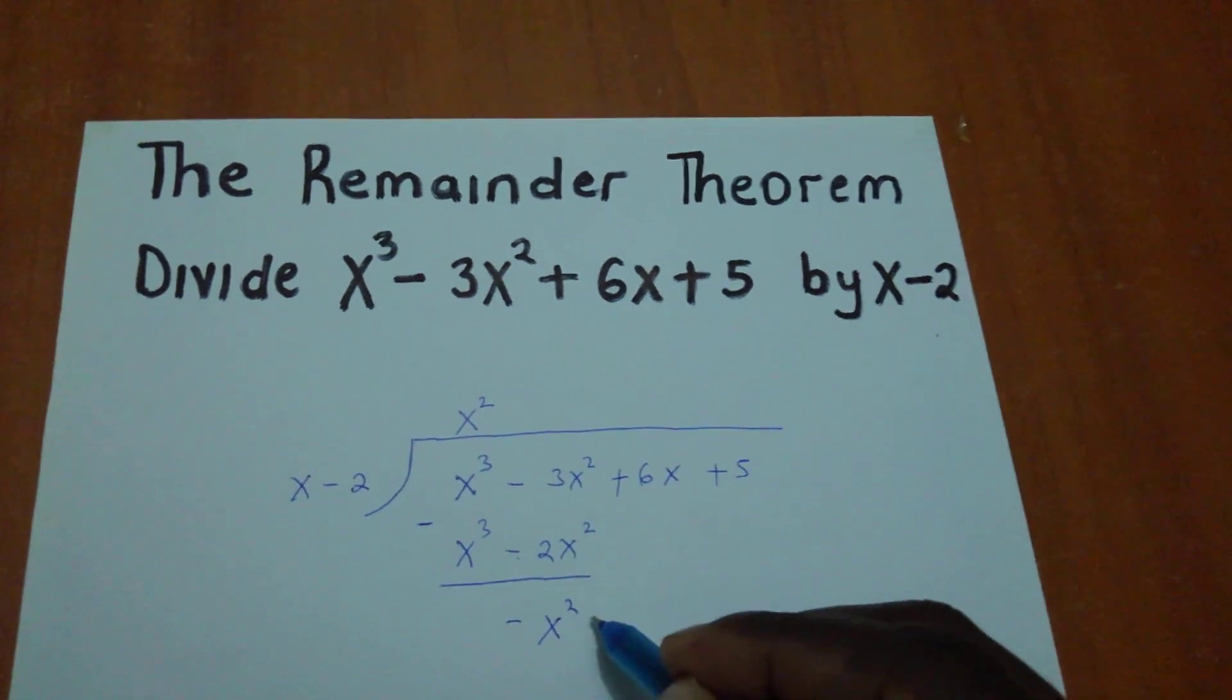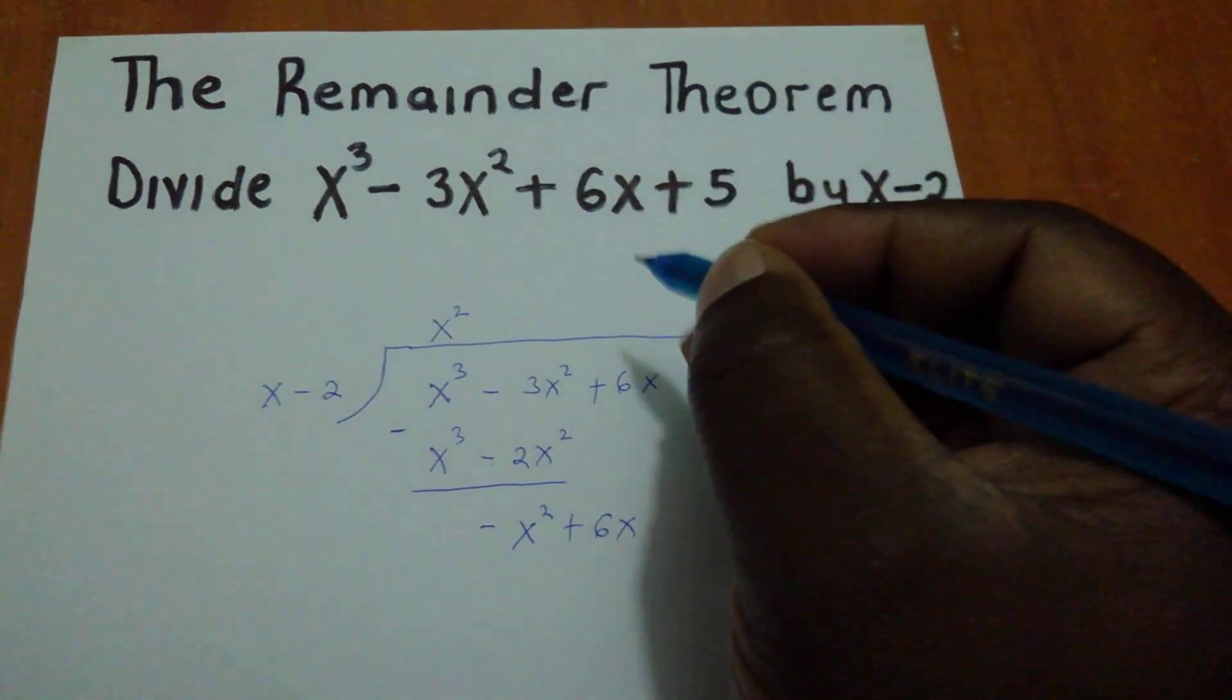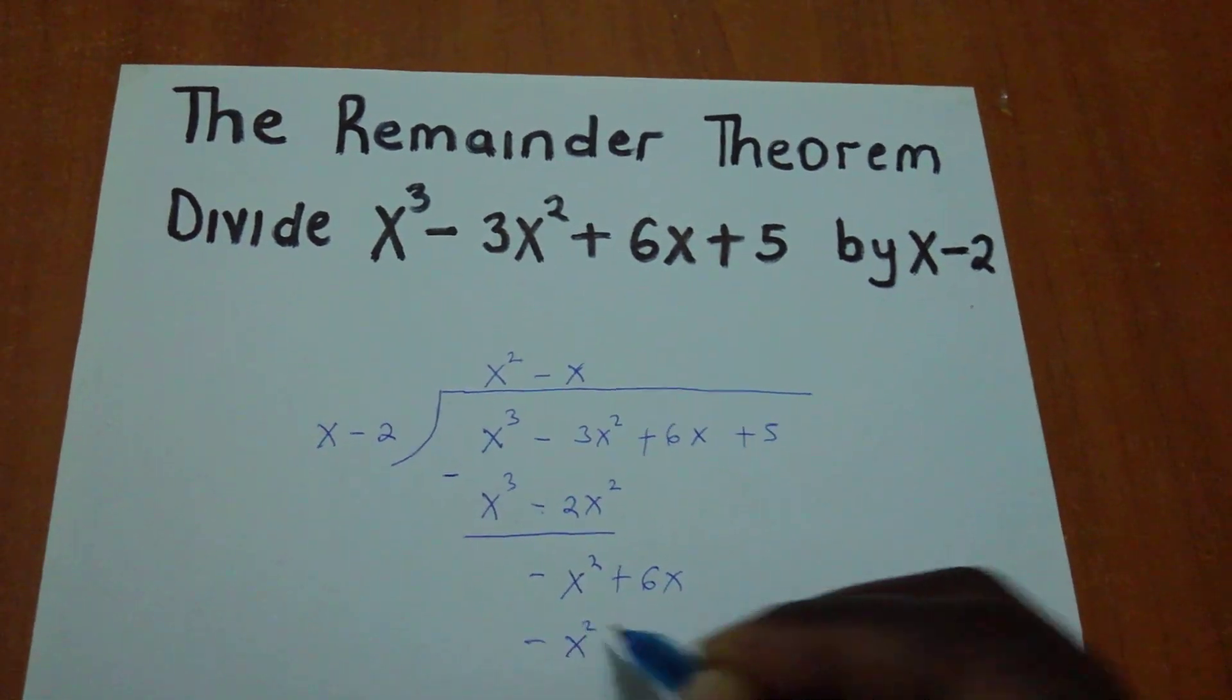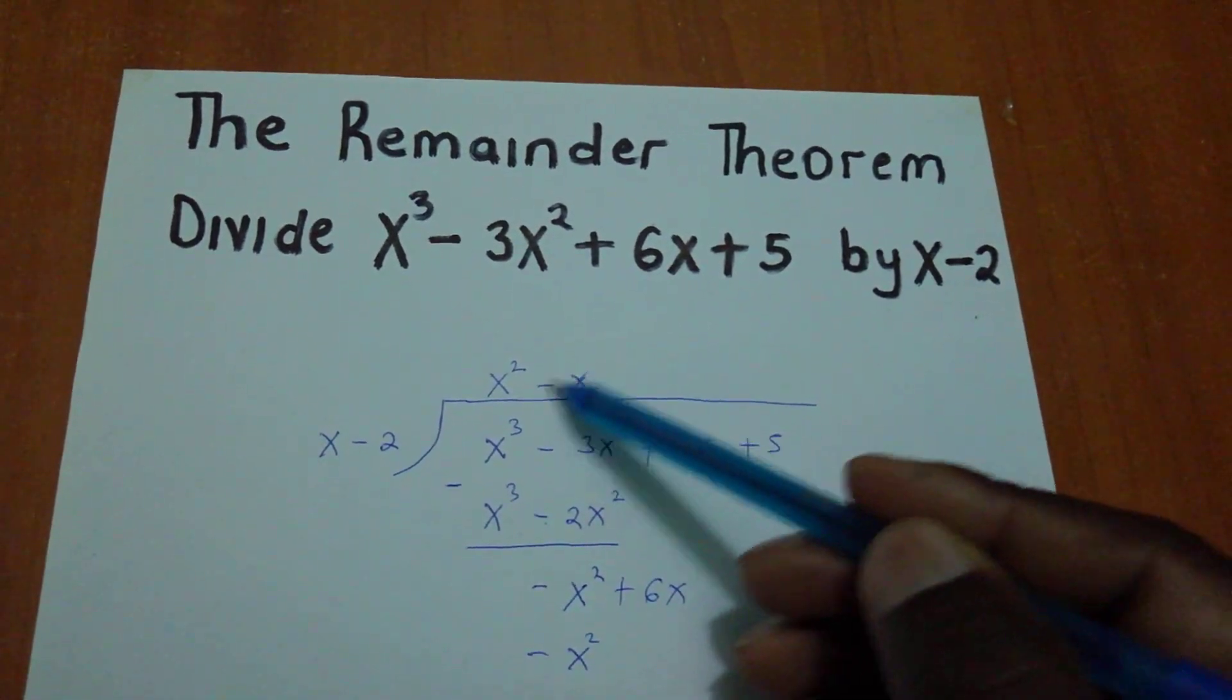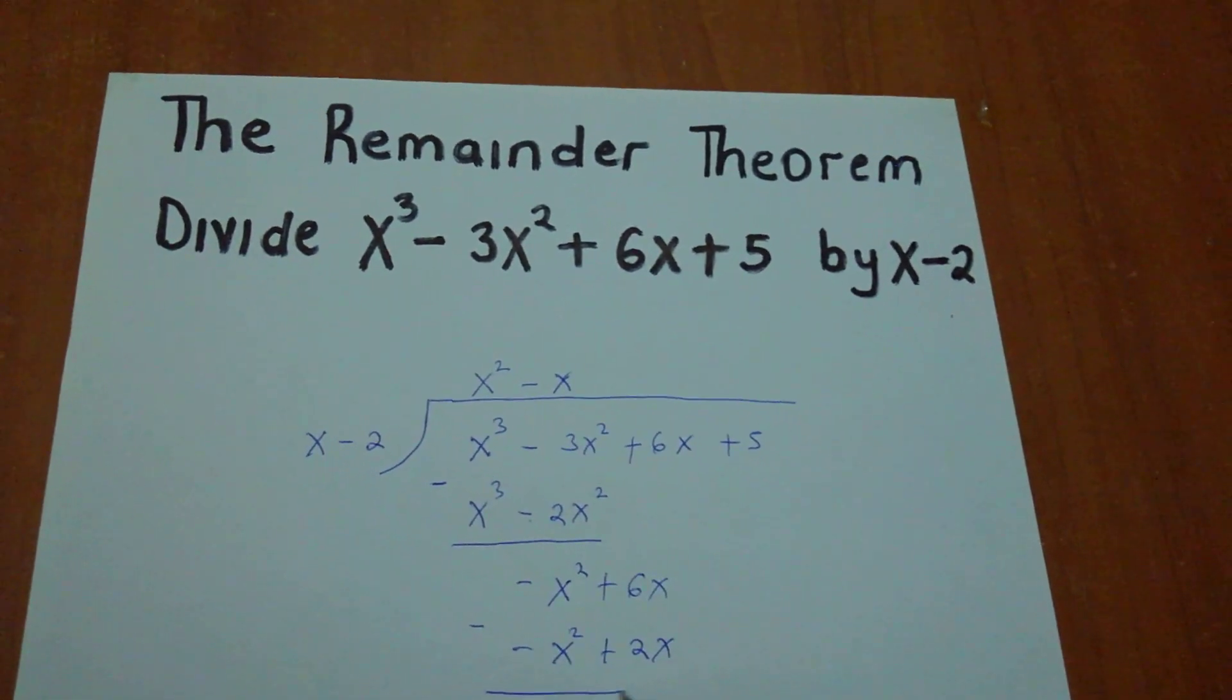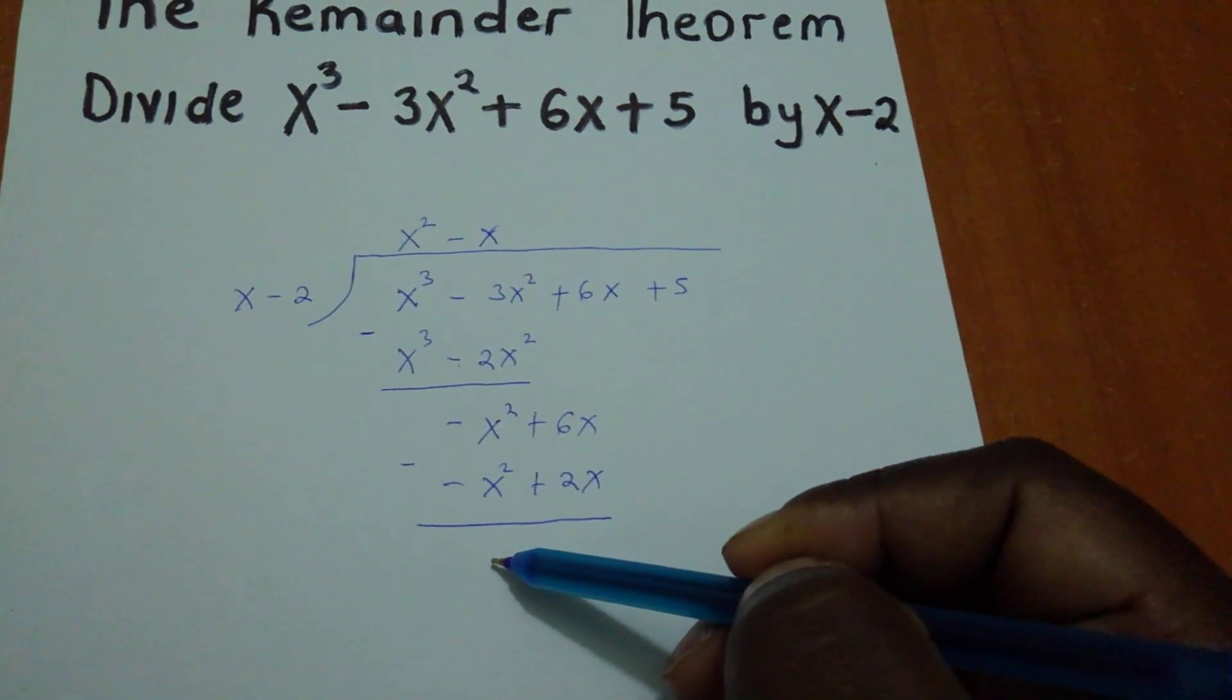We bring down the 6x to get -x² + 6x. Now x divided by -x² gives us -x. Multiplying -x by the divisor: -x times x gives -x², and -x times -2 gives +2x. Subtracting: -x² - (-x²) equals zero.